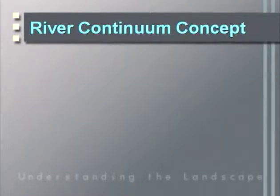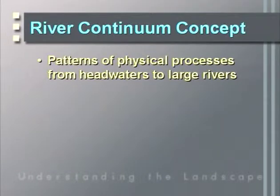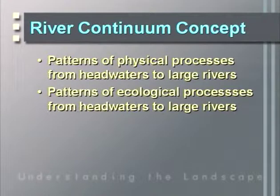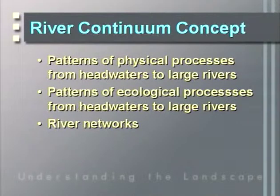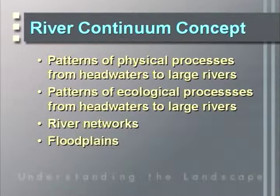One major concept for understanding trophic structure and energy flow in streams and rivers is the river continuum concept. It recognizes predictable patterns of physical processes from headwaters to large rivers, and that ecological processes also change predictably from small stream to large river. These continua of physical and ecological processes occur within river networks, and as rivers reach large size, they connect to important floodplains.